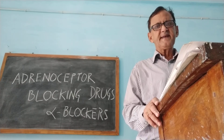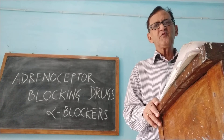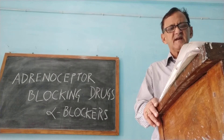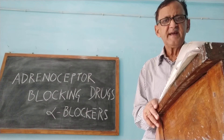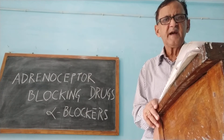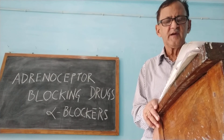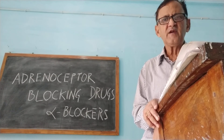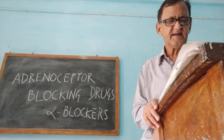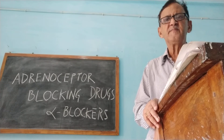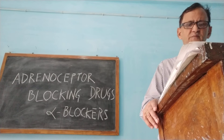The next drug in this group is alfuzosin, which is also a selective alpha-1A, alpha-1B, and alpha-1D receptor blocker. It is an orally active drug taken once daily and is used in benign prostatic hypertrophy.